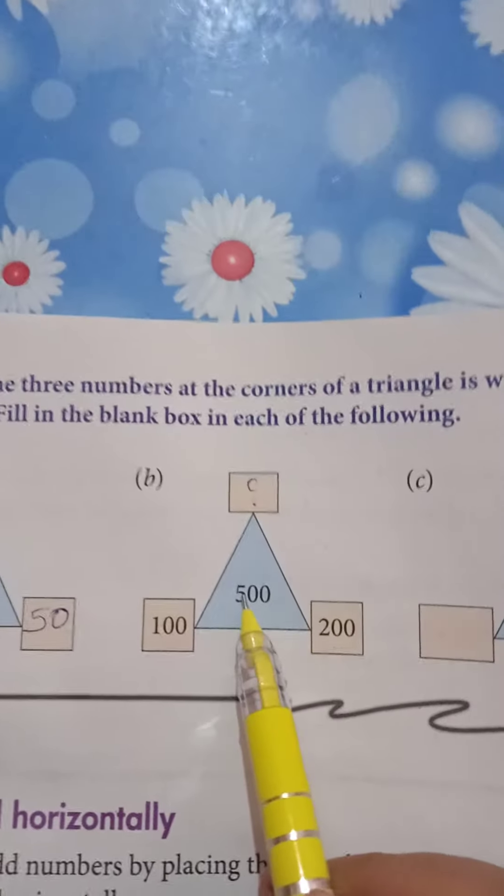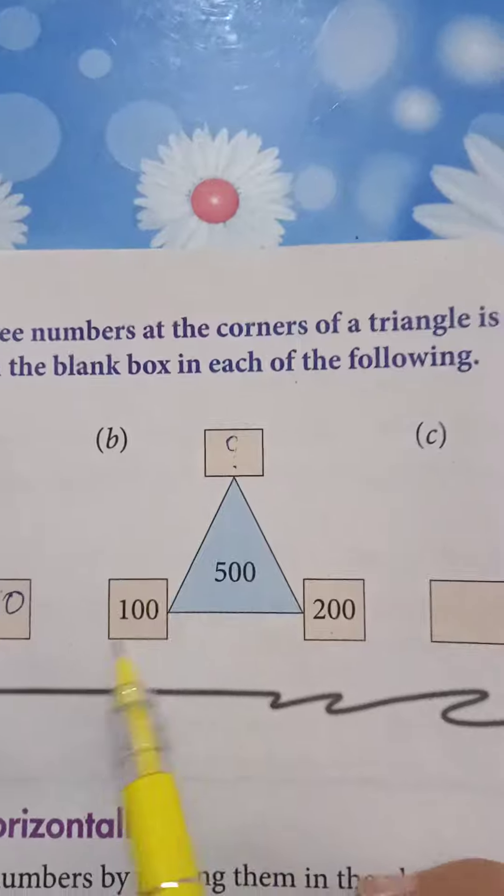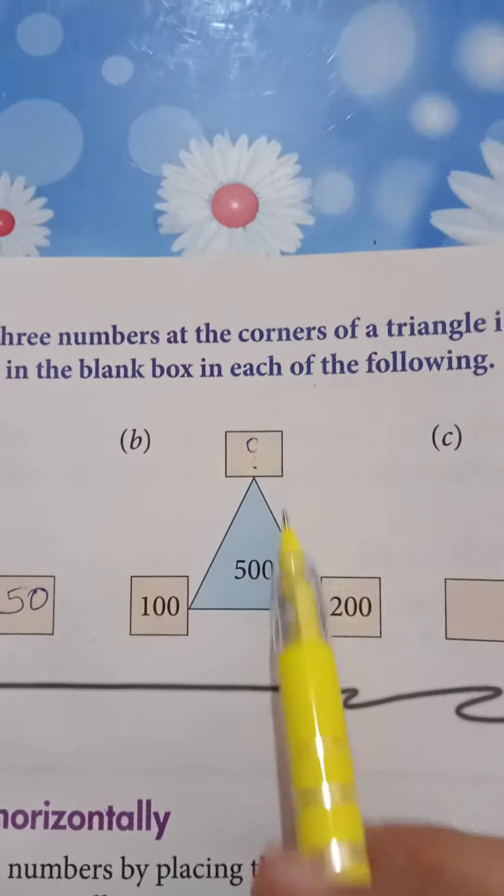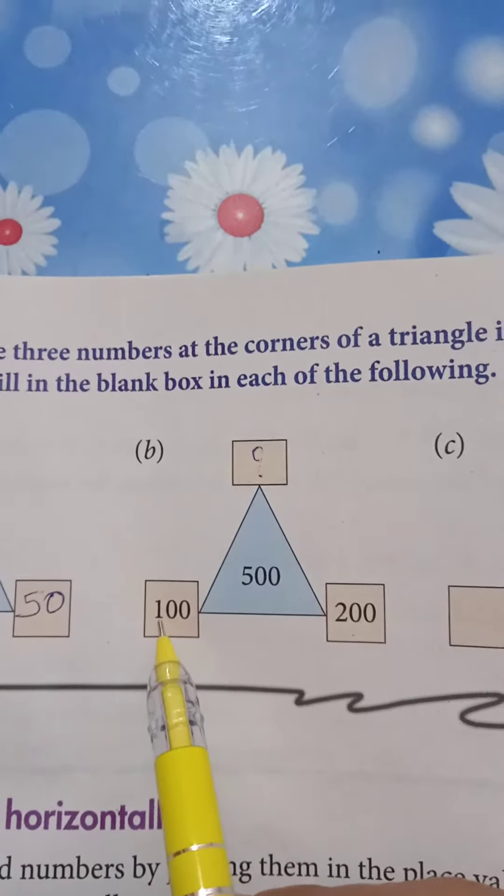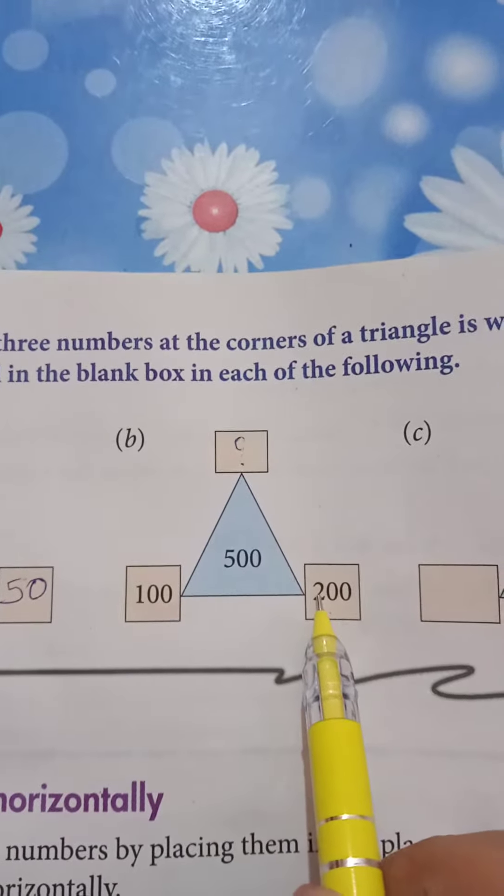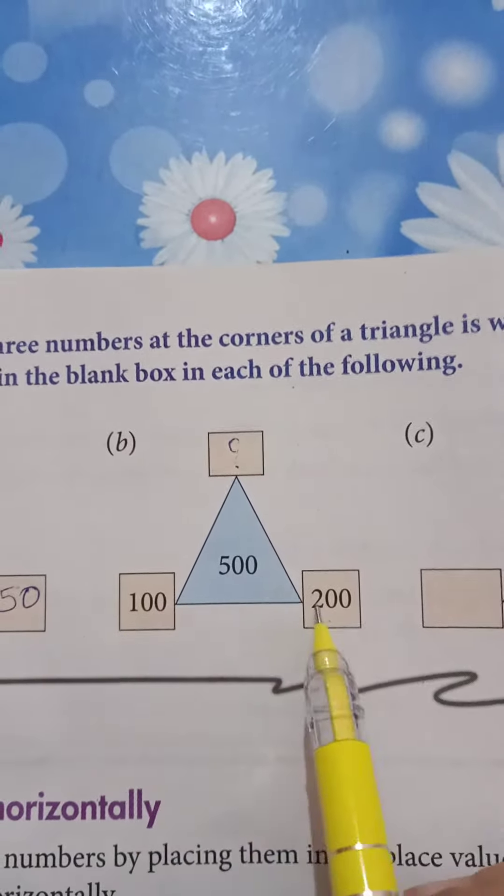Next what is this? Here 500. Here you have three boxes to fill with the correct sum, correct numbers. So 100 plus 200, and it makes 300. Now what you need to complete this one? So 200 plus 100 is equal to 300.